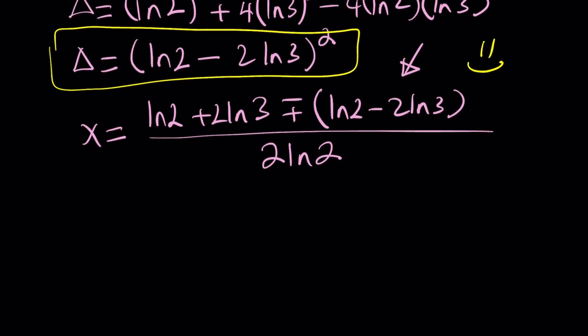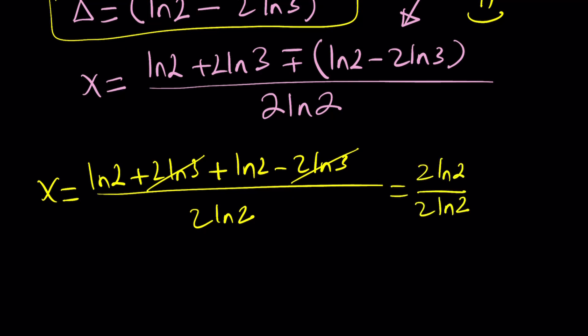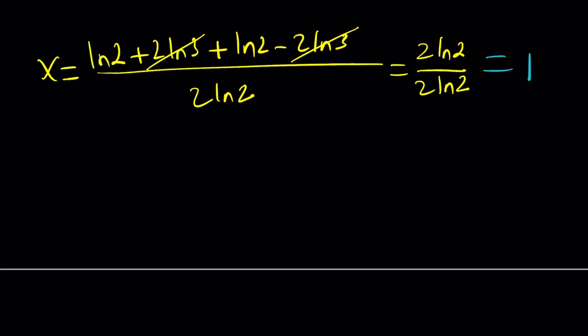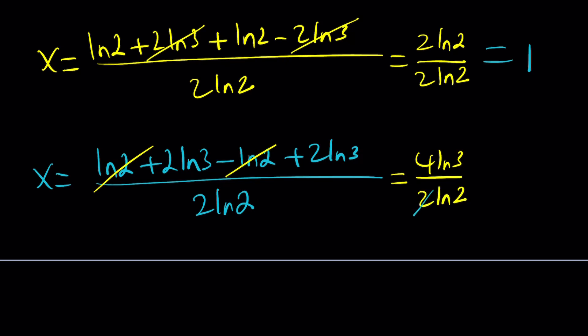So these are the values, but let's split them up into two solutions. ln 2 plus 2ln 3, let's go with the plus sign first: minus 2ln 3 divided by 2ln 2. 2ln 3 is going to cancel out. This is going to give you 2ln 2 divided by 2ln 2, which is equal to 1. So one of the solutions is 1, and we're going to take a second look at that. The other solution is going to come from the minus sign. ln 2 plus 2ln 3 minus ln 2 plus 2ln 3. Here ln 2 cancels out, and we end up with 4ln 3 divided by 2ln 2. 2 goes into 4 twice, so we can cross-cancel, and this becomes 2ln 3 over ln 2.